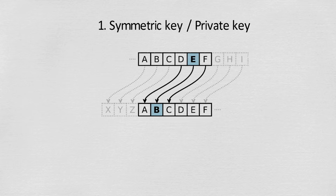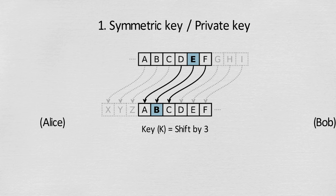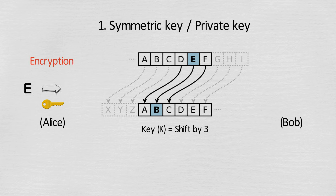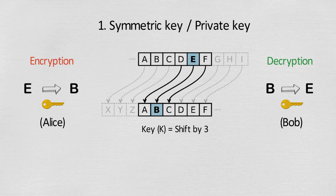A simple example is a key which shifts letters three places. When Alice wants to send a message to Bob, she left-shifts the letters three places — so 'E' is sent as 'B'. She also sends the key to Bob. On the receiving side, Bob uses the key sent by Alice to recover the message — letters are right-shifted three places, and he reads 'B' as 'E'.